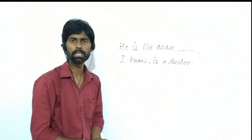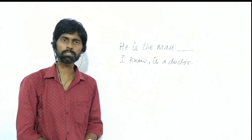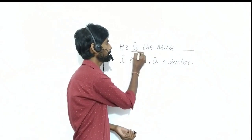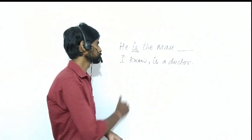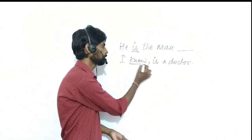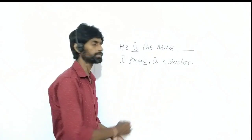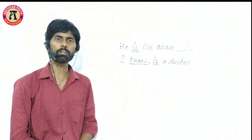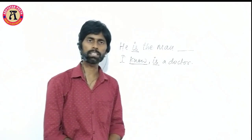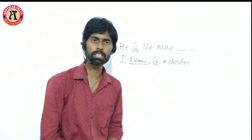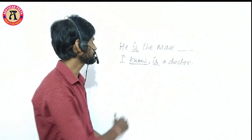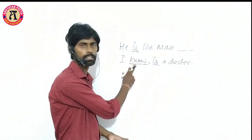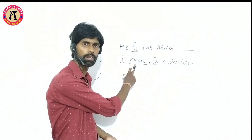How many clauses are being used? We check by counting the verbs. So one verb is 'is', the second verb is 'know', and the third verb is 'is'. We will count how many verbs are being used in this sentence — there are three verbs here.